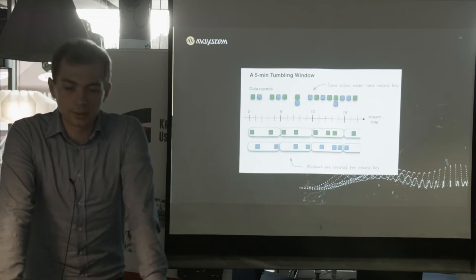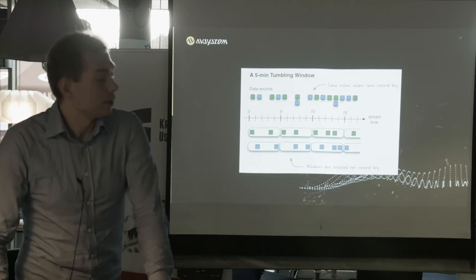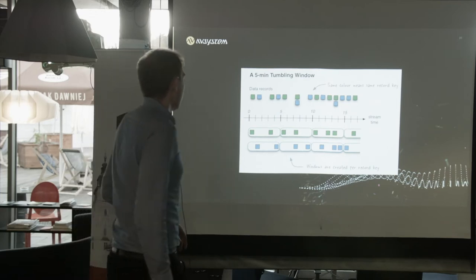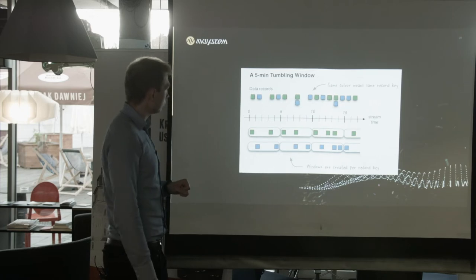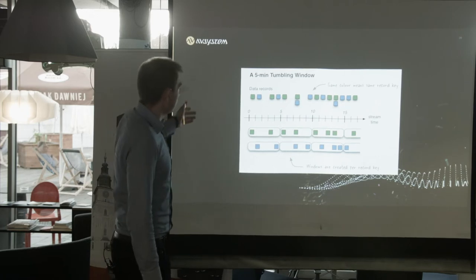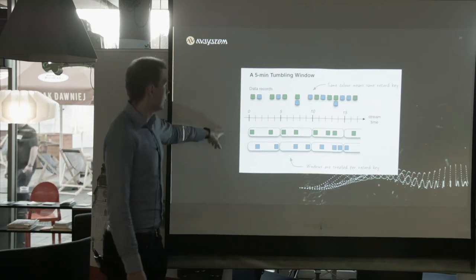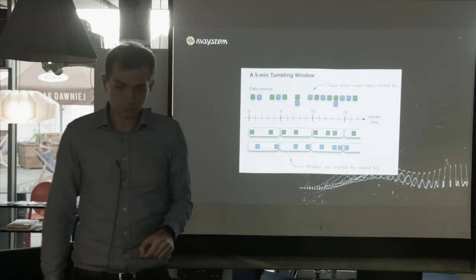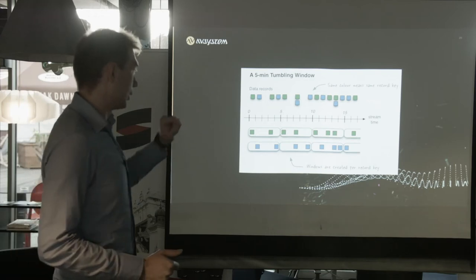Let's think about the simplest type of window. In this example we have a five-minute-length tumbling window — we can imagine those units are minutes of stream time. Data records come in the input stream and are aggregated by key; the same color means the same key. The records are grouped by key and then aggregated in time windows.